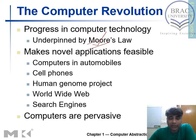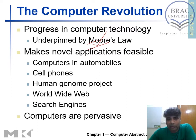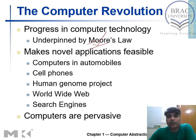Then there is the Human Genome Project. If you know about this domain, you would know how much computing power is needed for it. Advancement in transistor technology allowed us to do this research. The World Wide Web also requires heavy servers. All of this is possible because we have high-performance chips with lots and lots of transistors inside, which is possible because of Moore's Law.